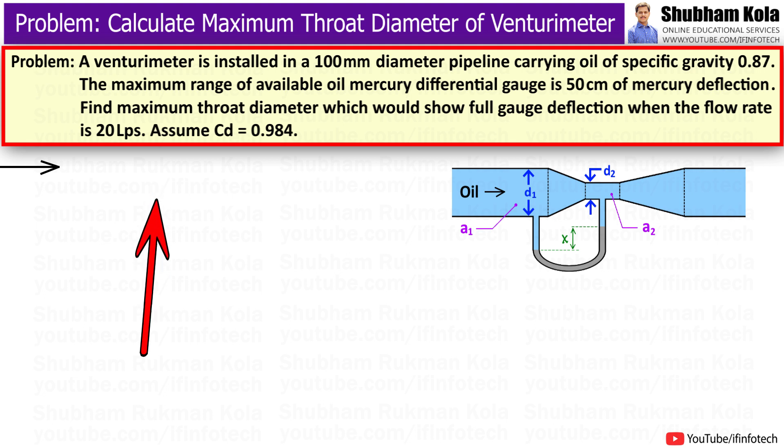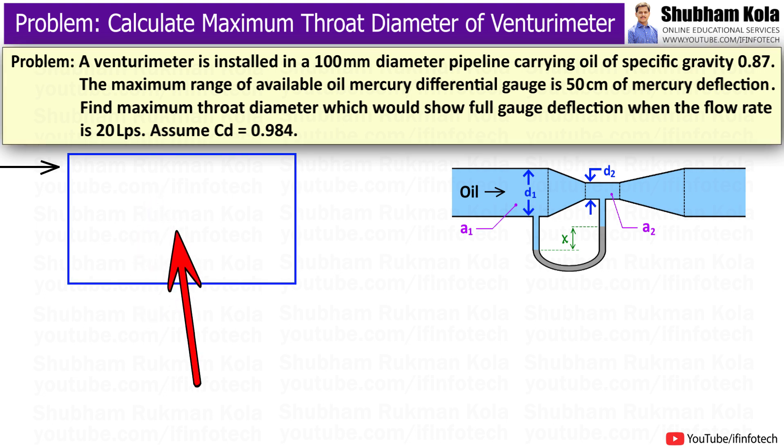To solve this problem, first I will write down the given data provided. Here in this problem, diameter of pipe is given as 100mm that is equal to 0.1m which is denoted as d1.